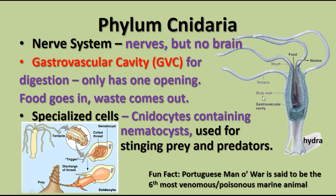Cnidarians have a nervous system called a nerve net — not a brain, but a network of nerves throughout the body that allows them to respond to stimuli. Their digestive cavity is called a gastrovascular cavity, lined with the gastrodermis, and this is how they digest their food. It is an incomplete digestive system with only one opening: the tentacles capture food, bring it into the mouth, and the gastrodermis secretes digestive enzymes to break down the food into nutrients; waste that can't be used is pushed back out through the same mouth opening.